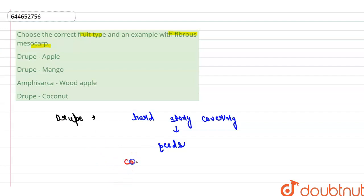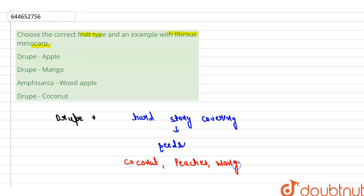The example of the drupe fruit is coconut. It also includes peaches, olive, and mango. So these are a few examples of the drupe fruit.